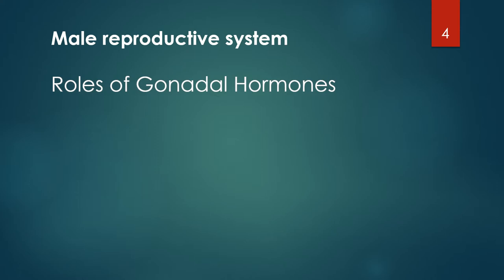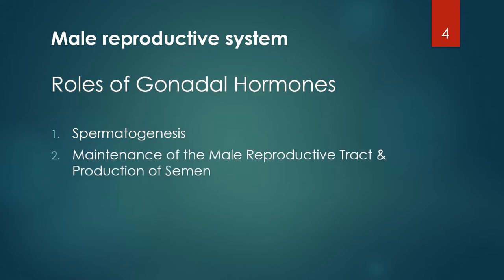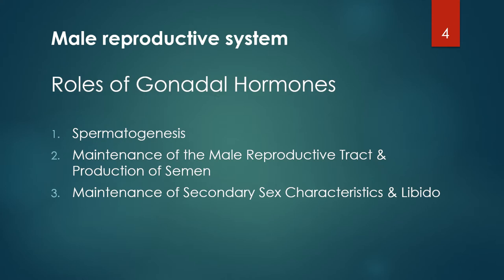The male reproductive system is evolved for continuous lifelong gametogenesis coupled with occasional internal insemination with high density of sperm — more than 60 per 10^6 per milliliter in 3 to 5 ml of semen. In adult males, the basic roles of the gonadal hormones are: support of gametogenesis by spermatogenesis, maintenance of the male reproductive tract and production of semen, and maintenance of secondary sex characteristics and libido. There is no overall cyclicity of this activity in men.